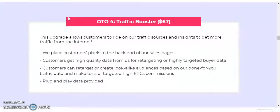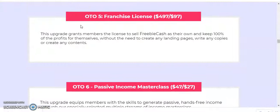OTO number four — Traffic Booster at $67: allows customers to ride on the vendor's traffic sources and insights to get more traffic from the internet. Customer pixels are placed on the back-ends of sales pages; customers get high-quality data for retargeting, can create look-alike audiences, and make tons of targeted high-EPC commissions — plug and play provided.